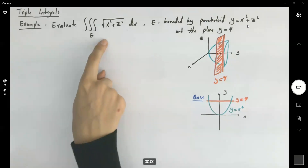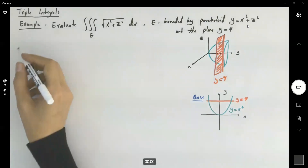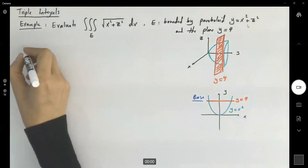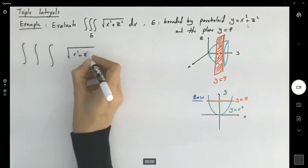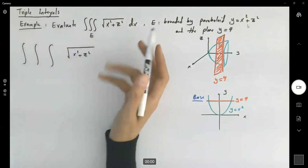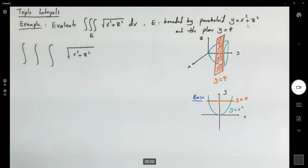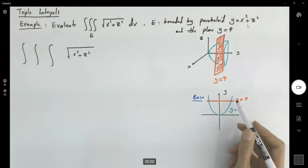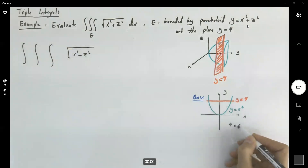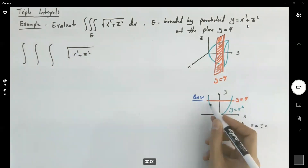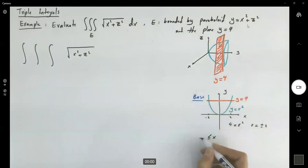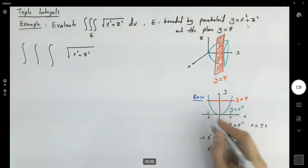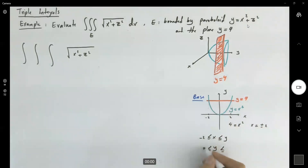Now let's try to set this up. We have the triple integral of the square root of x squared plus z squared. We need to decide the order of integration: dx, dy, dz. If y equals 4 and y equals x squared, then x becomes plus or minus 2. So my x is bounded between negative 2 and 2. My y from below is bounded by x squared, and from above is bounded by 4.